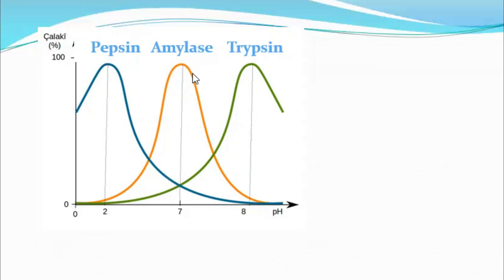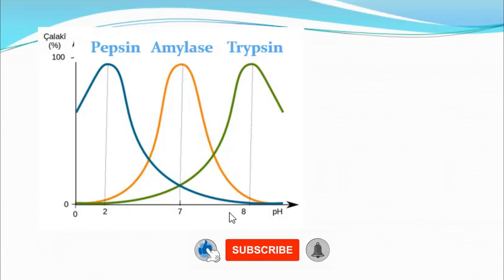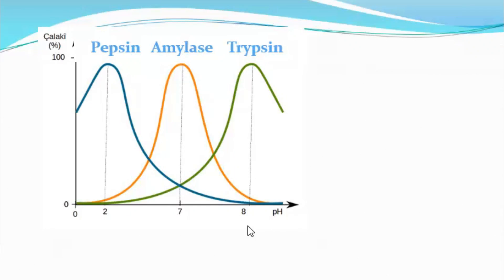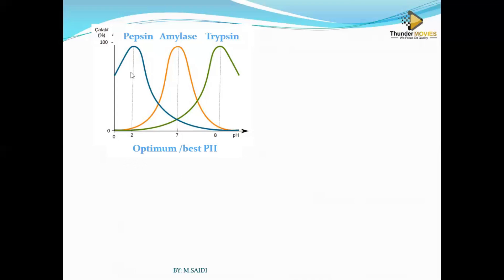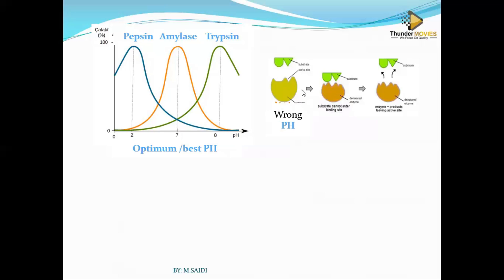Amylase works best in neutral medium at a pH of 7. Below that, its activity slows down to zero, and above pH 7, it also slows down to zero. Changing the pH affects the rate at which this enzyme works. Trypsin works in alkaline medium and the best pH is 8. Below that it works slowly until it reaches zero, and above that it will also reach a point where it cannot work anymore. So the best pH values are: pepsin pH 2, amylase pH 7, trypsin pH 8.